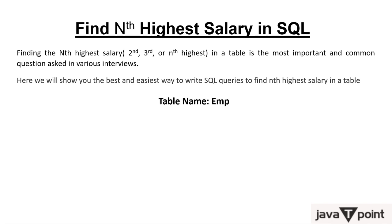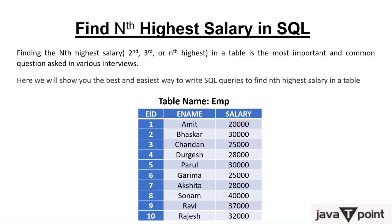Let's see what the table looks like. The table name is 'imp' and there are three columns: employee ID, employee name, and salary. There are 10 rows. For example, Amit is getting 20,000 salary and Bhaskar is getting 30,000 salary. There are some duplicates — both Bhaskar and Parul are getting 30,000 salary. This is quite possible because in an organization, more than one employee can get the same salary.